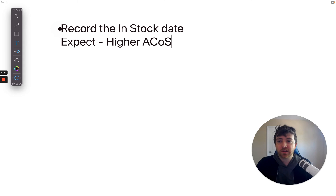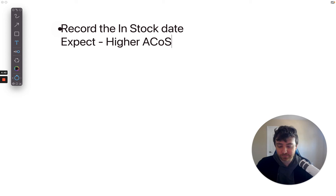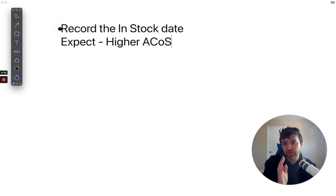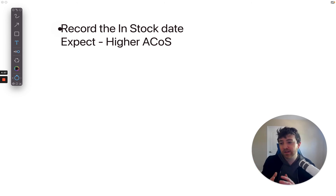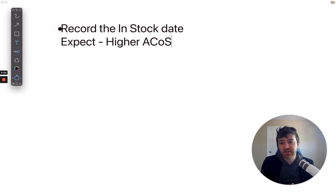I always recommend cutting bleeding keywords twice a week. I categorize bleeding keywords as eight clicks and no sales. For high ACOS keywords, in this situation I might wait — look at the chart after the first week and see if it's gradually getting better. There are situations where you might not need to do a ton of optimization because it naturally goes back to its original state.